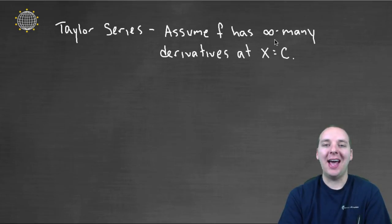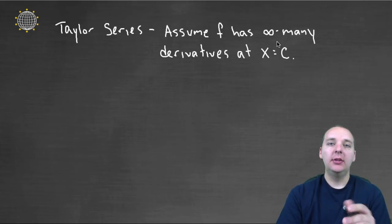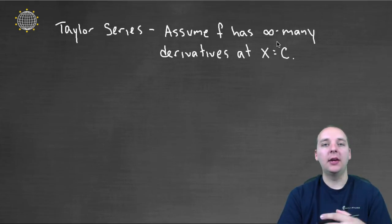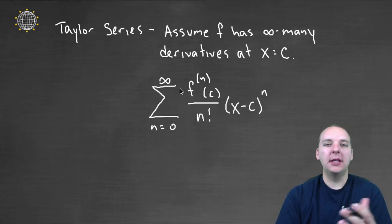So let's assume that your function has infinitely many derivatives, like sine x. Sine's derivative is cosine, cosine's derivative is negative sine, negative sine's derivative is negative cosine. You can do that forever, that'll never stop, you'll never run out of derivatives. Alright so if you do, then let's think about what this pattern would be for this, you can almost think of it as an infinitely long polynomial.